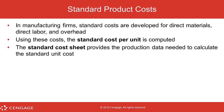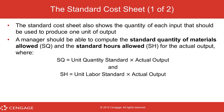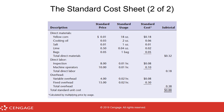To calculate the standard cost per unit, we create standard costs for direct materials, direct labor, and overhead. All of that information comes from a standard cost sheet, which provides the production data needed to calculate the standard unit cost. The standard cost sheet shows the quantity of each input that should be used to produce one unit of output, allowing management to compare the standard versus the actual output.